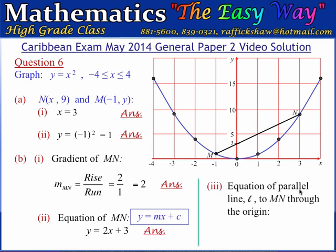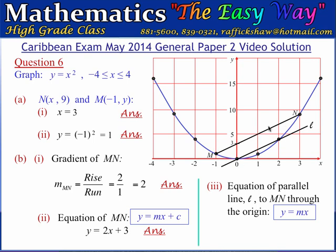We are asked to write the equation of the line parallel to MN that passes through the origin, calling it line L. Because it is parallel to MN it has the same gradient of 2. Since it passes through the origin the c value is 0, so it takes the form y equals mx. Therefore the equation of line L is y equals 2x.